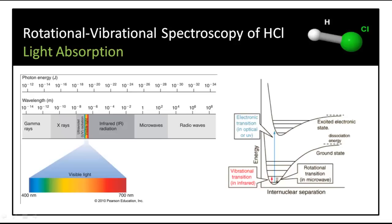First up, we will consider light absorption by the HCl diatomic molecule. Depending on the wavelength or energy of light, transitions of different magnitudes will occur.